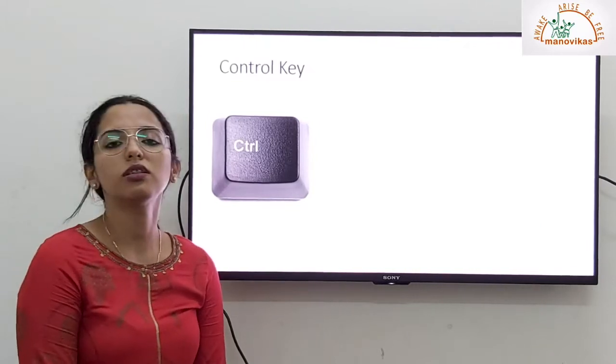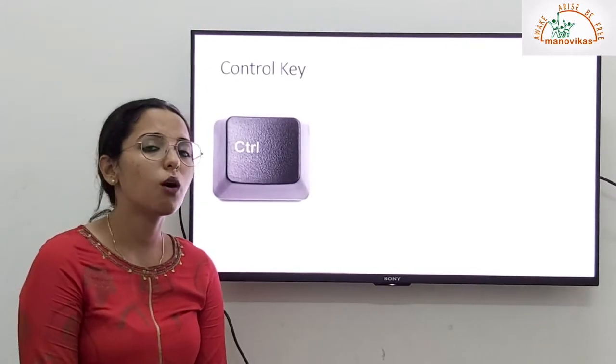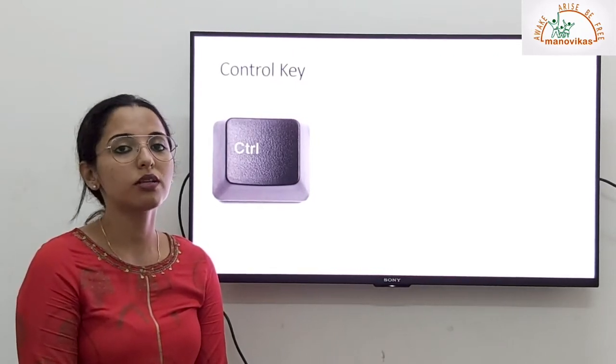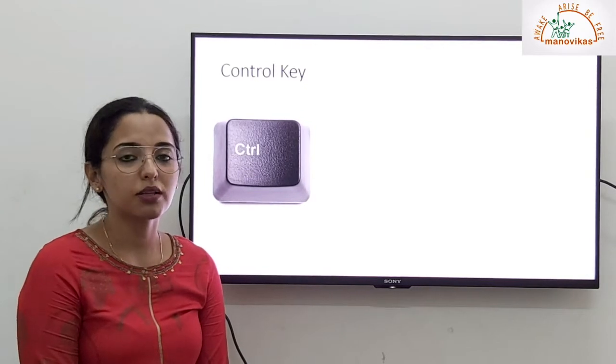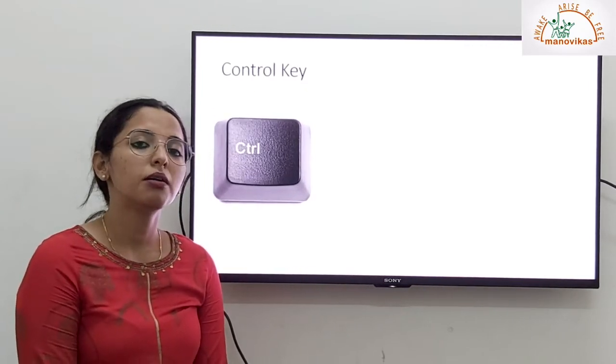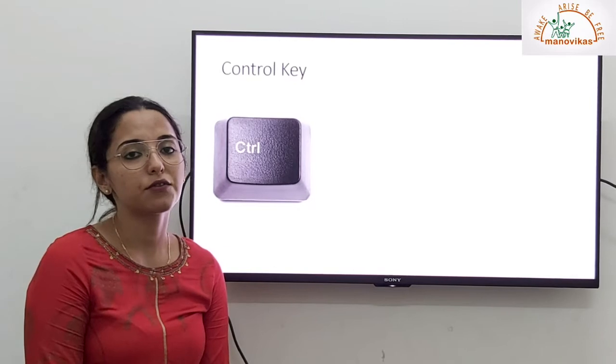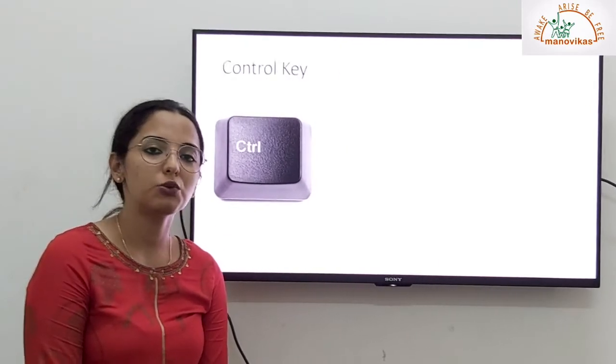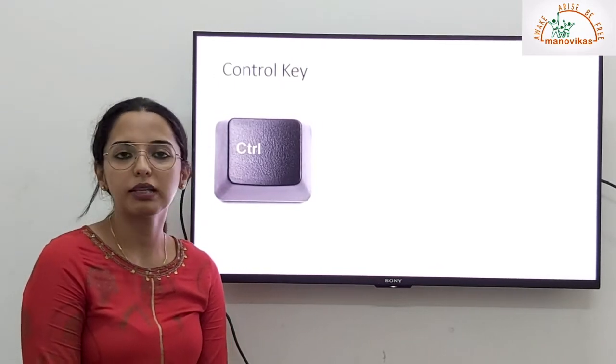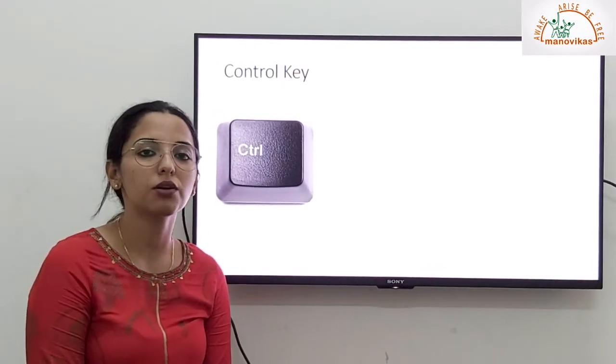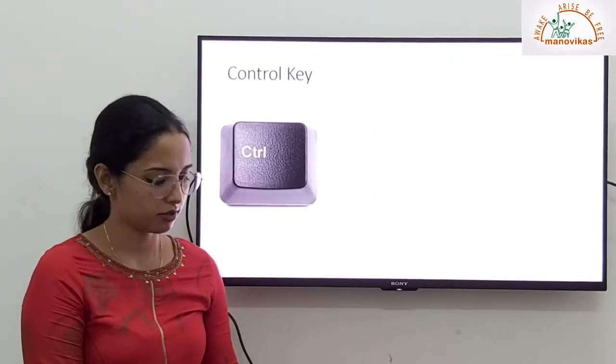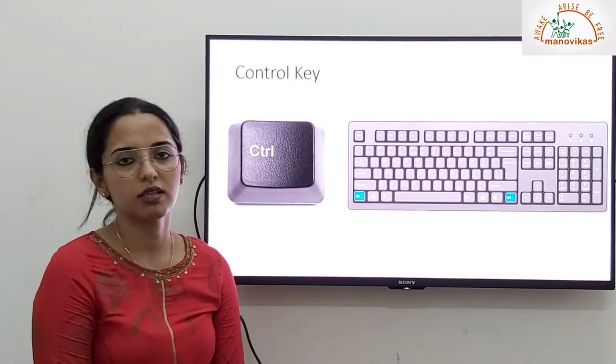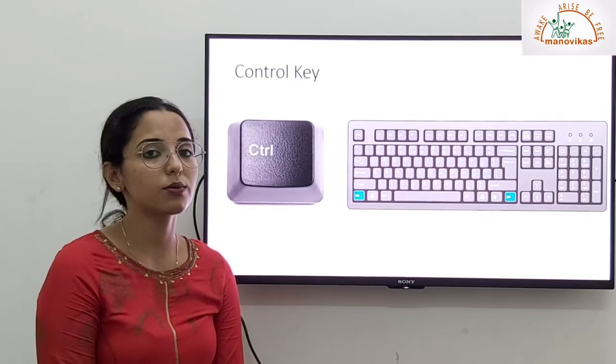Then we have a control key. A control key also works like a shift key. It is also a combination key. Control keys are used to create shortcuts. For example, if you want to make the text bold, you make use of control and B key. So this helps you to make your text bold. It is located right below the shift keys. Control keys are also at two places.